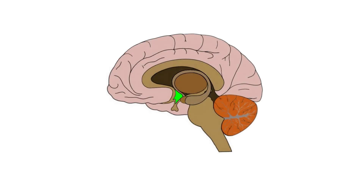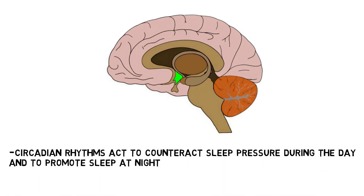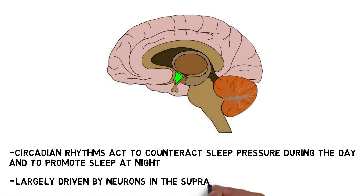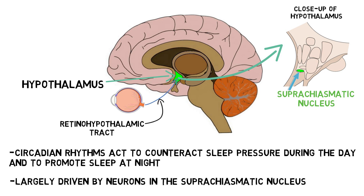Sleep timing is further regulated by circadian rhythms, which are 24-hour cycles that regulate a long list of physiological parameters. Circadian rhythms act both to counteract sleep pressure during the day and promote sleep at night. They are largely driven by neurons in a region of the hypothalamus called the suprachiasmatic nucleus, whose neurons keep time using rhythmic patterns of gene expression that repeat roughly every 24 hours. To ensure these circadian clocks are in tune with the outside world, the suprachiasmatic nucleus receives information from the retina about light in the environment via the retinohypothalamic tract, which serves as the primary external cue for synchronization.